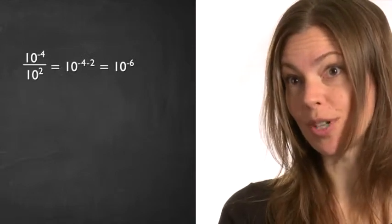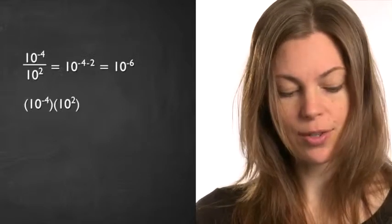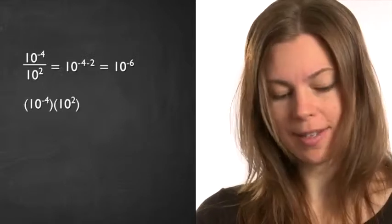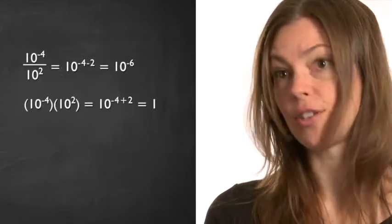If you were to multiply these two numbers instead, you would take 10 to the negative 4 times 10 to the 2, and here you would add them. So this is 10 to the negative 4 plus 2, and this is 10 to the negative 2.